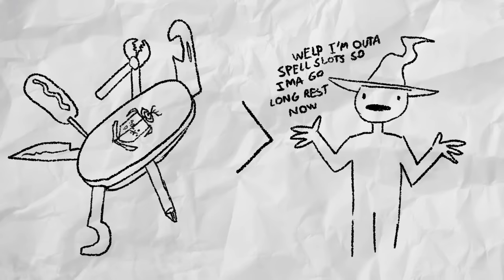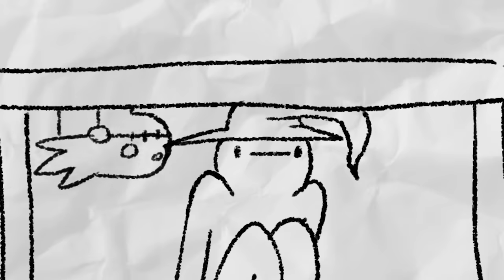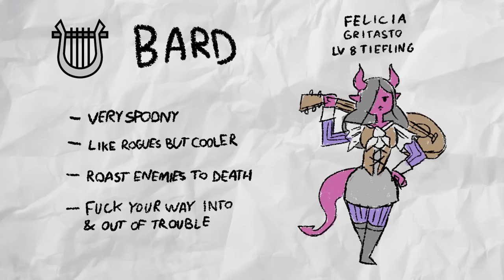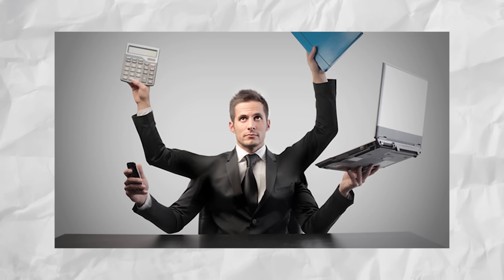A jack of all trades, master of none is still better than someone who only has one gimmick and has to hide for the rest of the fight because they've run out of class features and spell slots. If the sword and shield were an RPG class, it would be the bard, one that's good at doing everything and doing everyone.